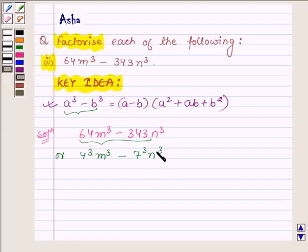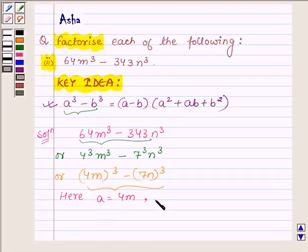Then we have (4m)³ - (7n)³. On comparing this with the left-hand side of this identity, we find that a is equal to 4m and b is equal to 7n.